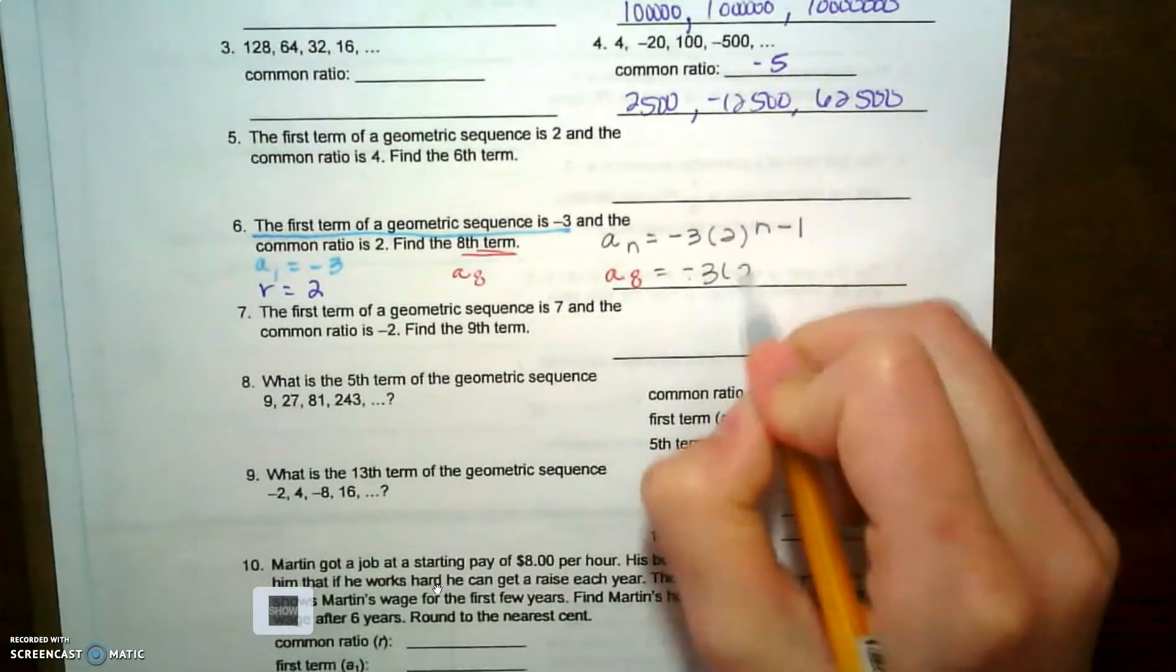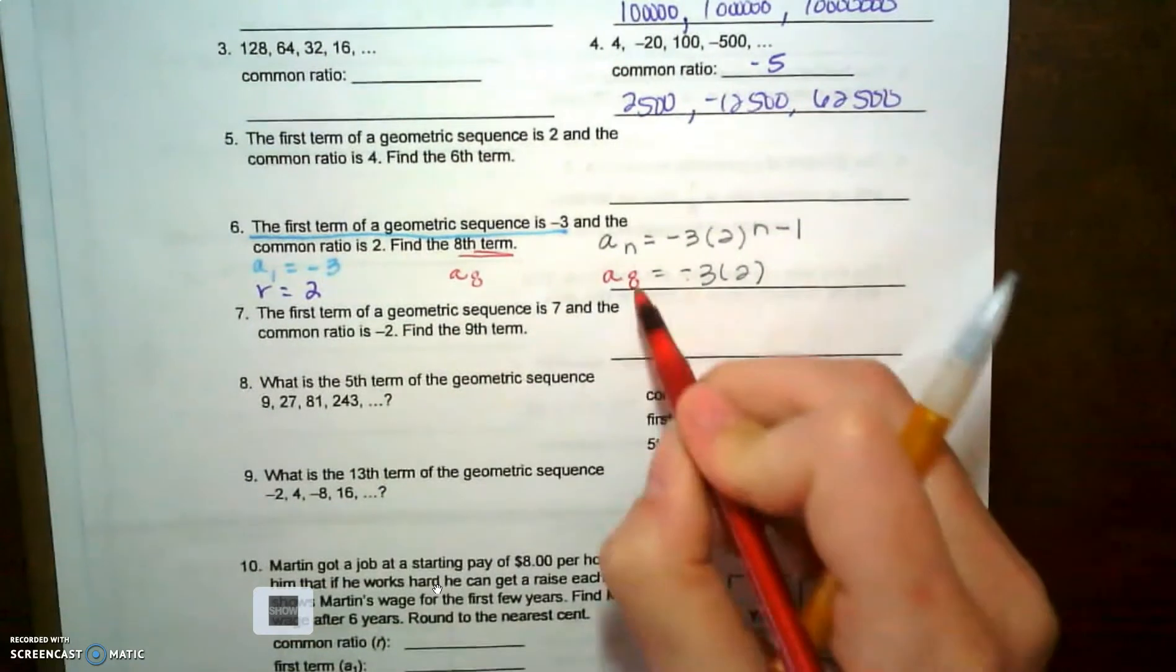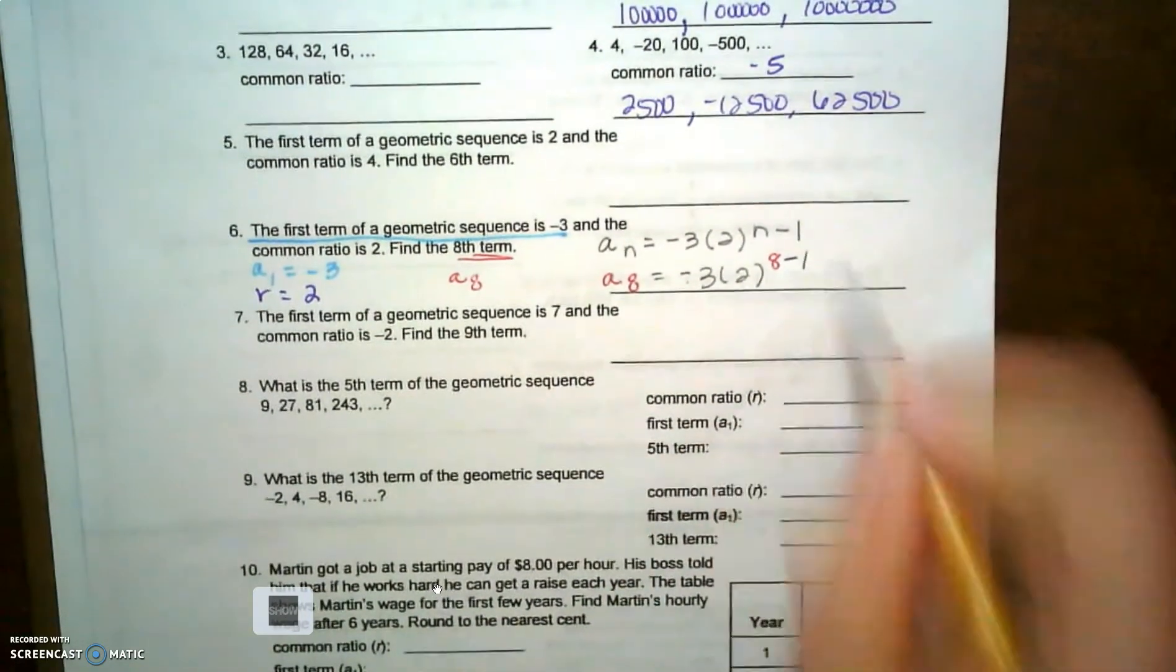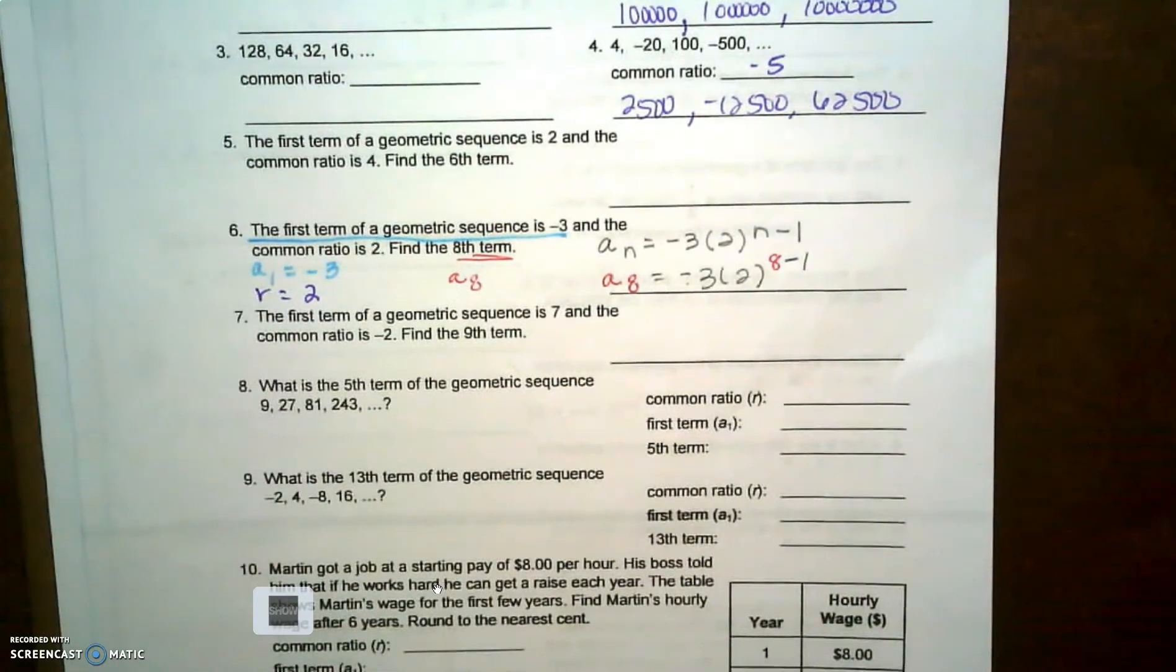So if I want to find the eighth term, I'm going to rewrite this explicit equation, but in that n spot I'm gonna substitute in an eight. I can type that into my calculator and we should get negative three eighty four.